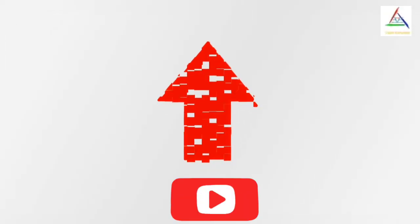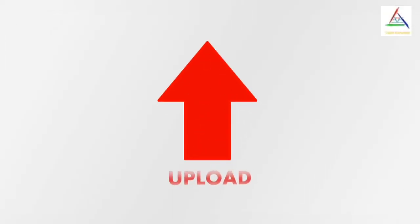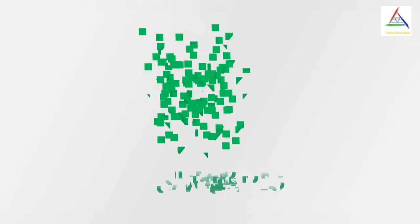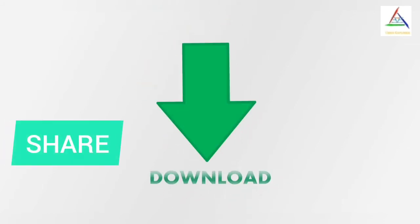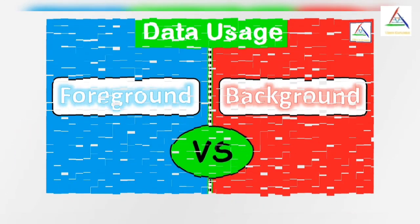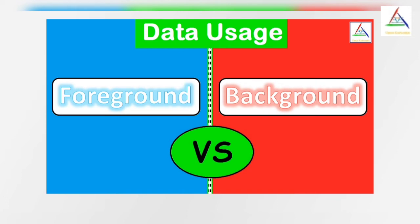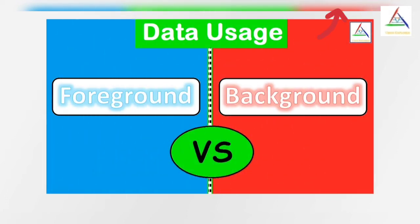When you upload or download photos, games, or anything from the internet, you have noticed that it uses cellular data. Apps also use data when they are running in the background. If you want to know more about foreground and background data, you can check out the linked video for more detail.